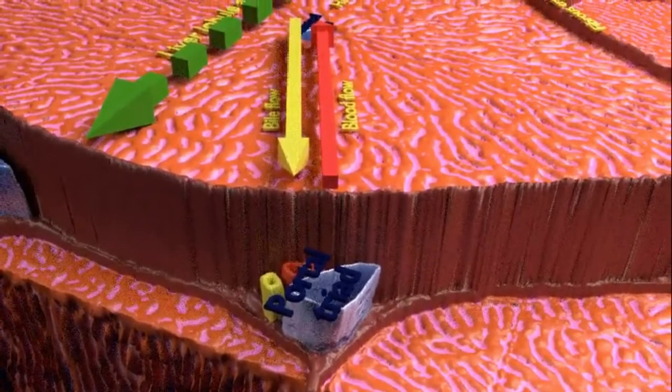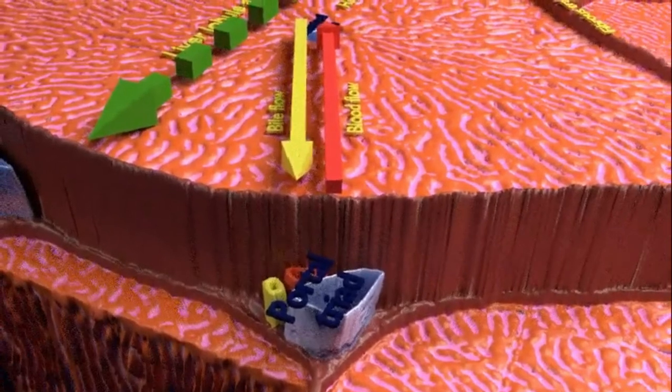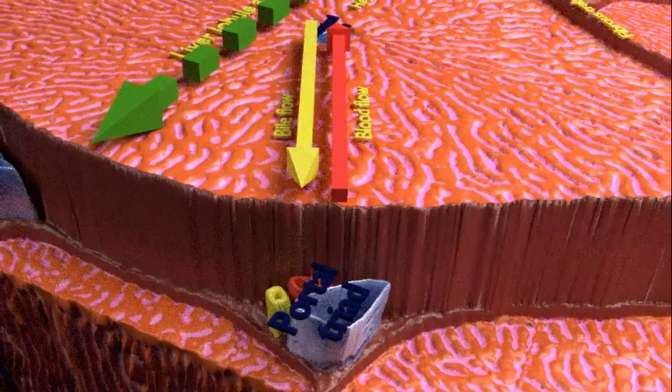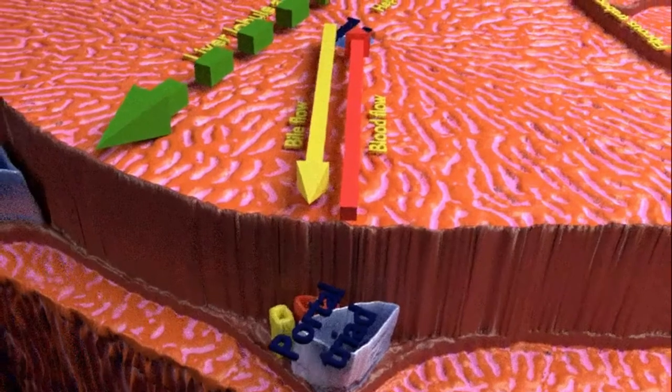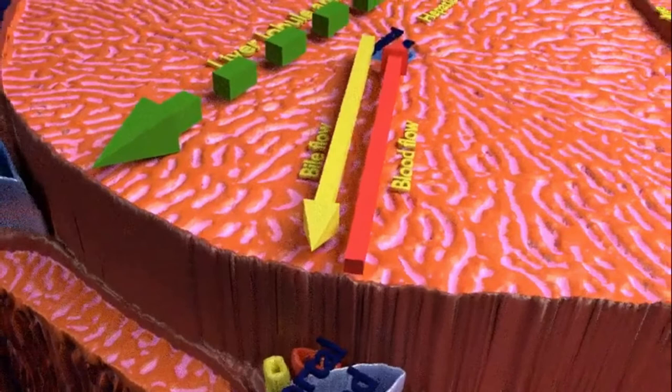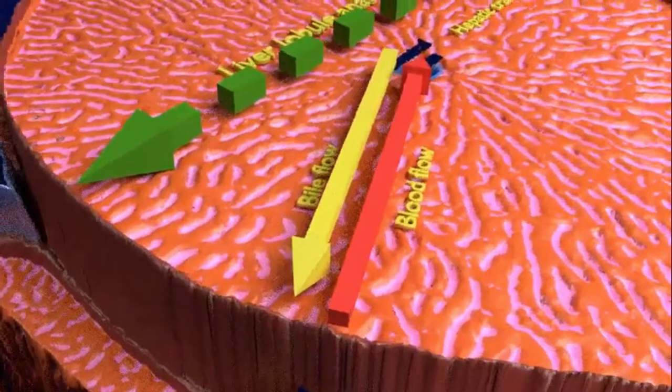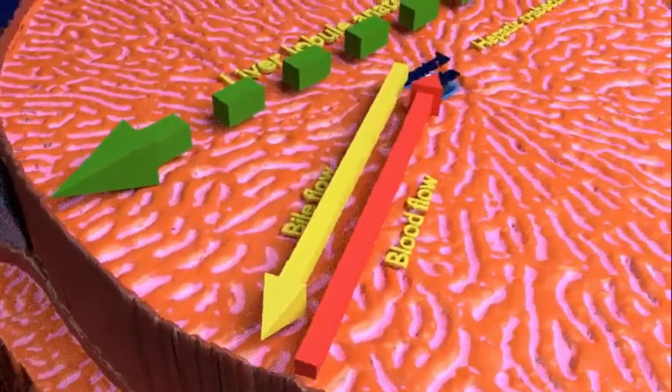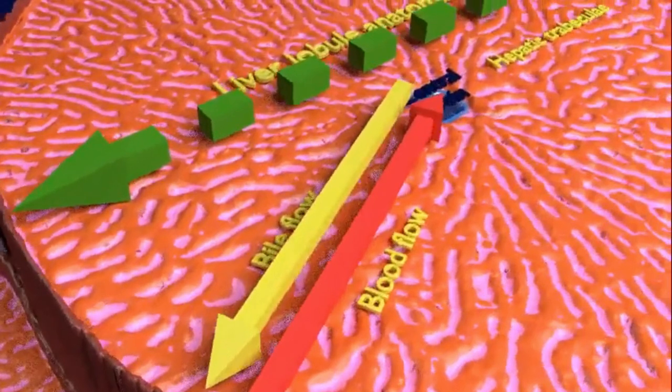These branches of hepatic artery and portal vein merge together in the intermediate region of the anatomical lobule, thus mixing the oxygenated and deoxygenated blood, which drains into the central vein.